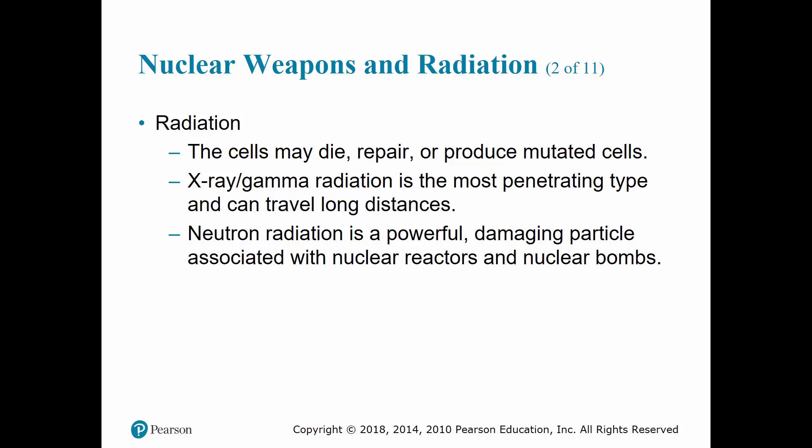Neutron radiation is a powerful and damaging particle that penetrates several hundred meters of air and easily passes through the body. Because it occurs infrequently outside of the nuclear chain reaction, its greatest threat to life occurs near an active nuclear reactor or bomb explosion.